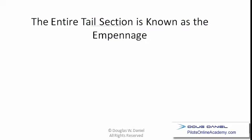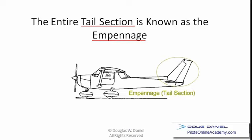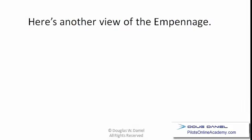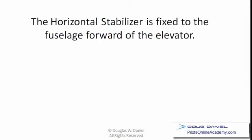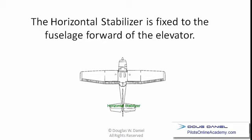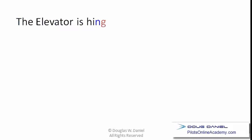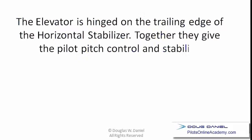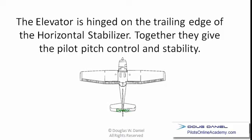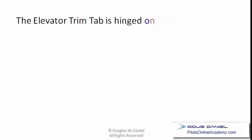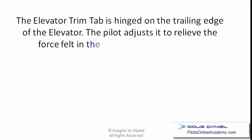The entire tail section is known as the empennage. The horizontal stabilizer is fixed to the fuselage forward of the elevator. The elevator is hinged on the trailing edge of the horizontal stabilizer — together they give the pilot pitch control and stability. The elevator trim tab is hinged on the trailing edge of the elevator; the pilot adjusts it to relieve the force felt on the cockpit elevator control.